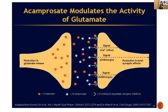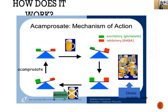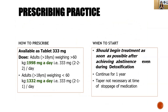Acamprosate works on glutamate and NMDA receptors. With chronic alcohol use, GABA acts on the CNS and glutamate increases to balance homeostasis. When the patient suddenly stops, removal of GABA inhibition causes a sudden surge of glutamate activity, responsible for alcohol withdrawal features. Acamprosate acts on the NMDA receptor to manage homeostasis between GABA and glutamate. Dosing: for patients over 60 kg, give 333 mg in divided doses — two tablets morning, two afternoon, two evening per day (total 1998 mg).